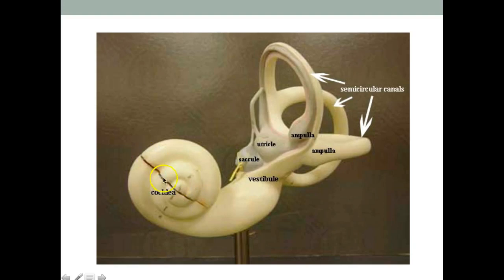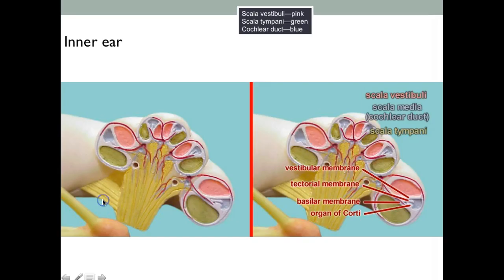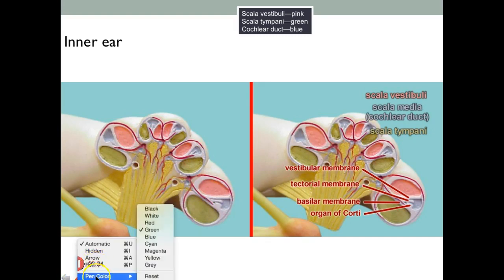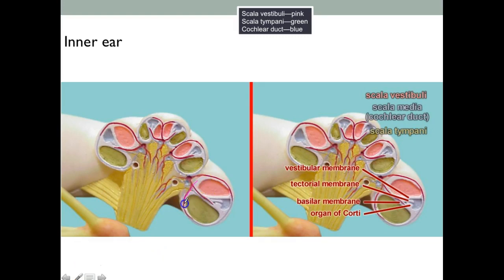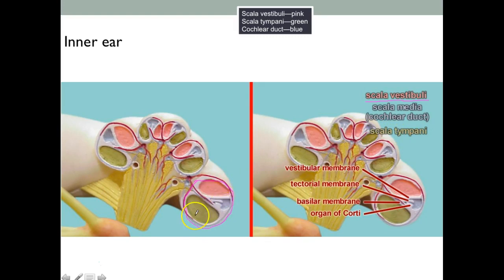Let's look at what the cochlea looks like when we cut it open. On this model it can be opened and we can see the inside. Here are the three ducts: the pink represents scala vestibuli, the blue represents scala media or cochlear duct, and the green represents scala tympani. These are the three ducts.